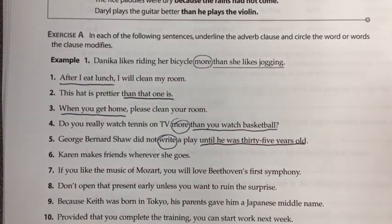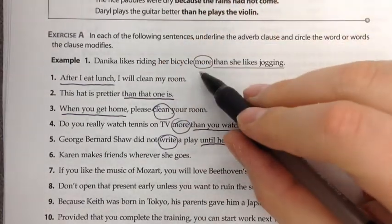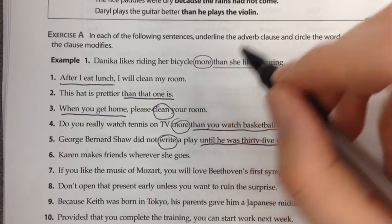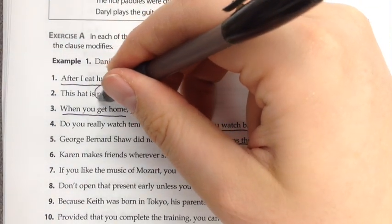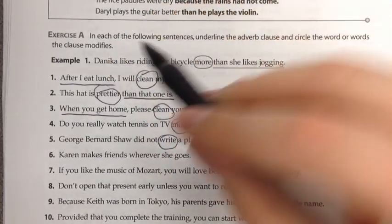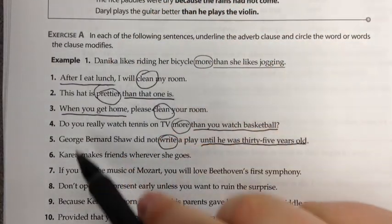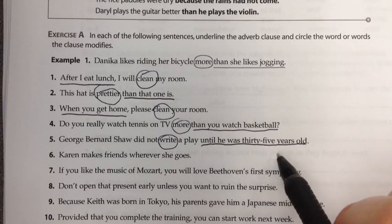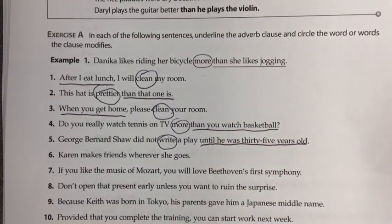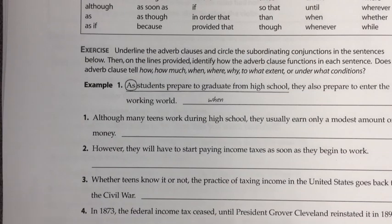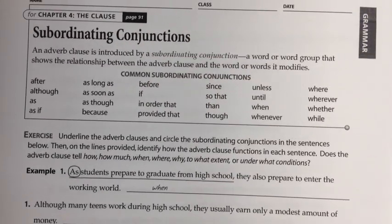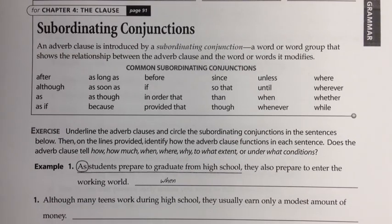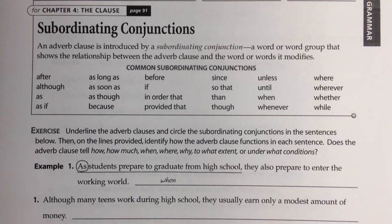Let me circle all the things that are described — I forgot this part. You're supposed to circle the word being described. Number one describes 'clean,' number two describes 'prettier,' number three describes 'clean' again, number four describes 'more,' and number five describes 'write.' If you're having trouble finding the subordinating conjunctions, there's a list of all of them on the next exercise — on the back of the handout. You can use that as a cheat sheet. Good luck.